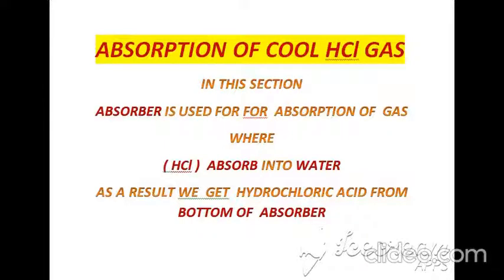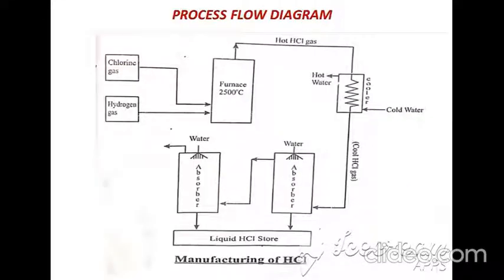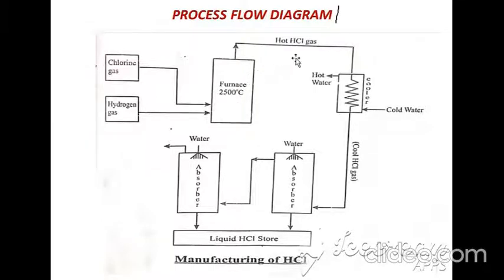The cool gas is sent to the absorber where it is absorbed into water. Water showers from the top of the absorber and cool HCl gas enters through the bottom, and after reacting we obtain hydrochloric acid in liquid form. This is the process flow diagram of manufacturing of hydrochloric acid. In conclusion, chlorine gas and hydrogen gas react at 2500°C in a special furnace; the exit HCl gas is sent to the cooler, and after decreasing temperature it is absorbed into water to obtain hydrochloric acid in liquid form.